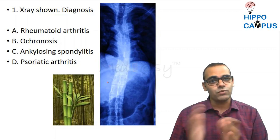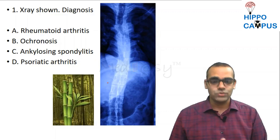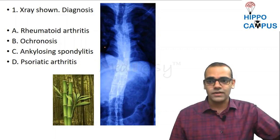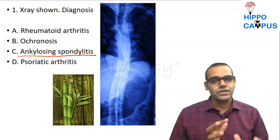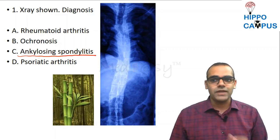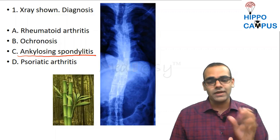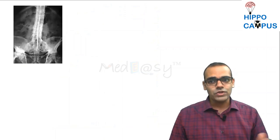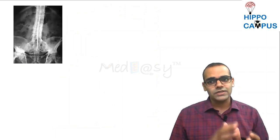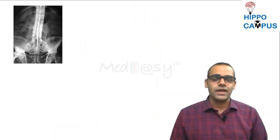Bamboo spine appearance is a frequently asked, repeat question. The answer is ankylosing spondylitis. It is because of the ossification or calcification of the ligaments due to enthesitis — this bamboo spine is the classical appearance of ankylosing spondylitis. There are various other radiological signs seen in ankylosing spondylitis.